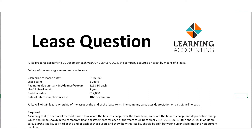The question requires: assume that the actual method is used to calculate the finance charge over the lease term. Calculate the finance charge and depreciation charge to be shown in the company's financial statements for each of the years ending 31st December 2014, 2015, 2016, 2017, and 2018 — that's about five years. In addition, calculate the liability to FJ Limited at the end of each of these years and show how the liability should be split between current liabilities and non-current liabilities.